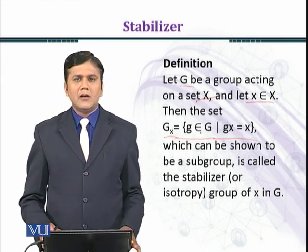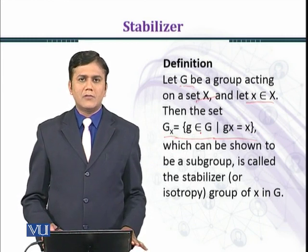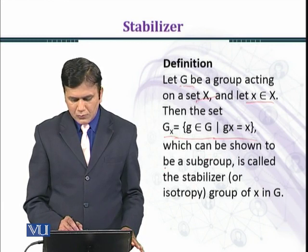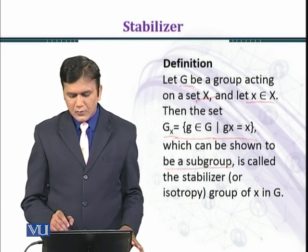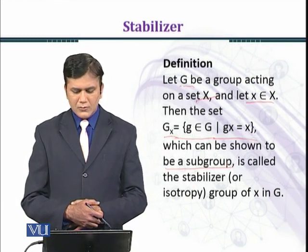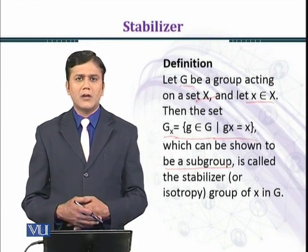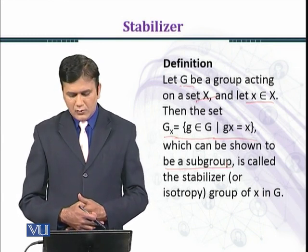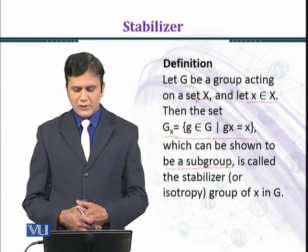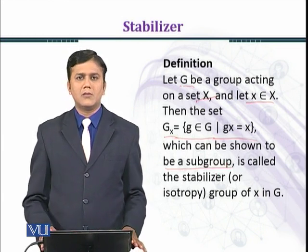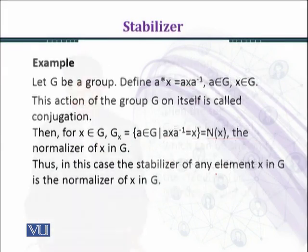That is, under g, x is fixed. This can be shown to be a subgroup, and G_x is called the stabilizer or isotropy group of x in G.